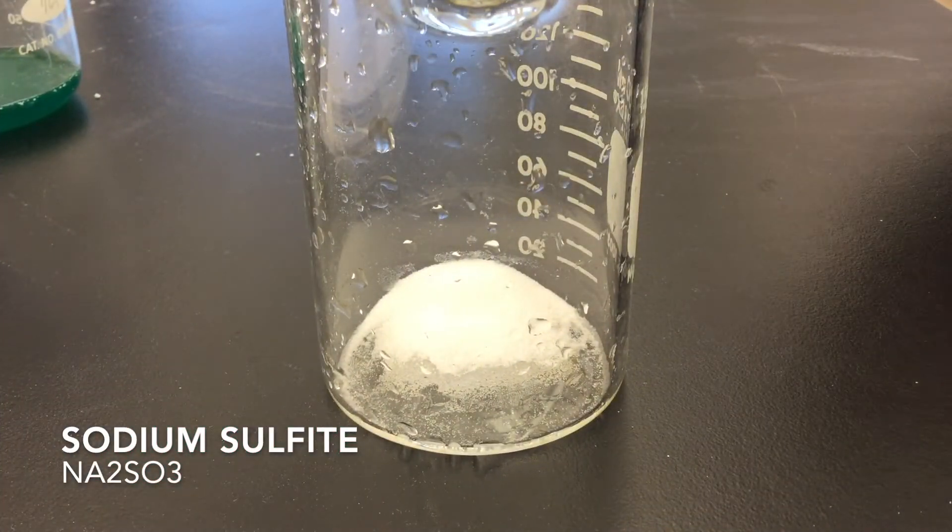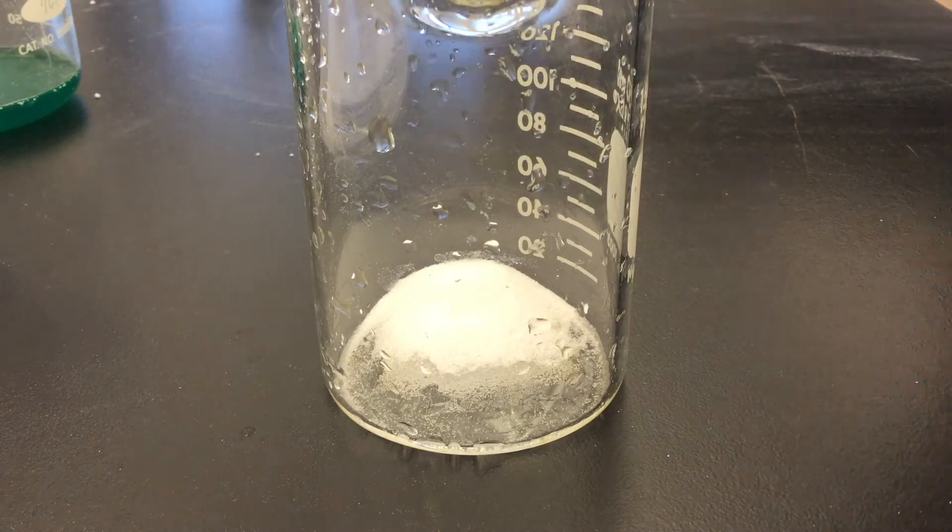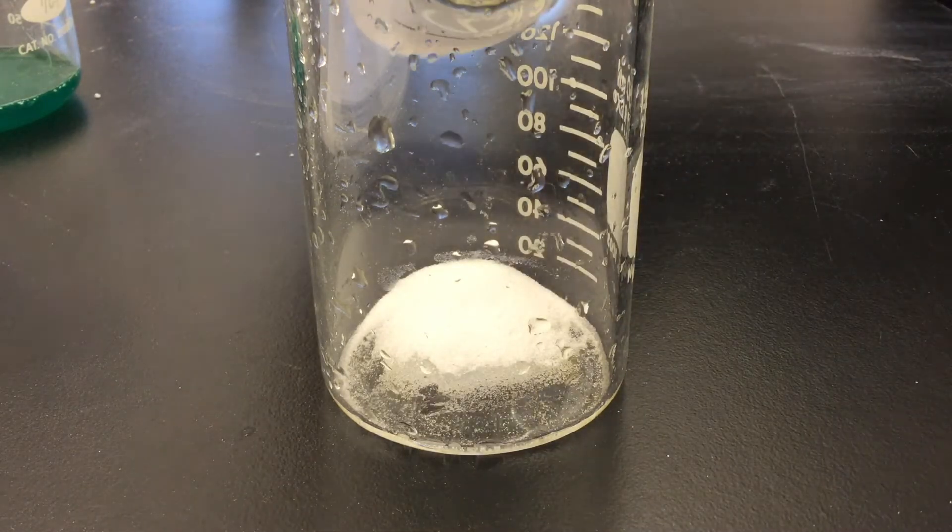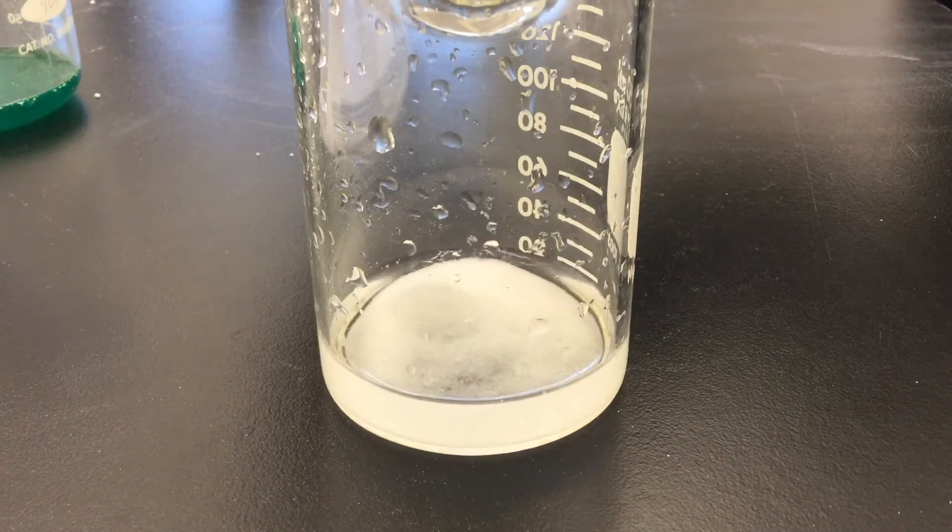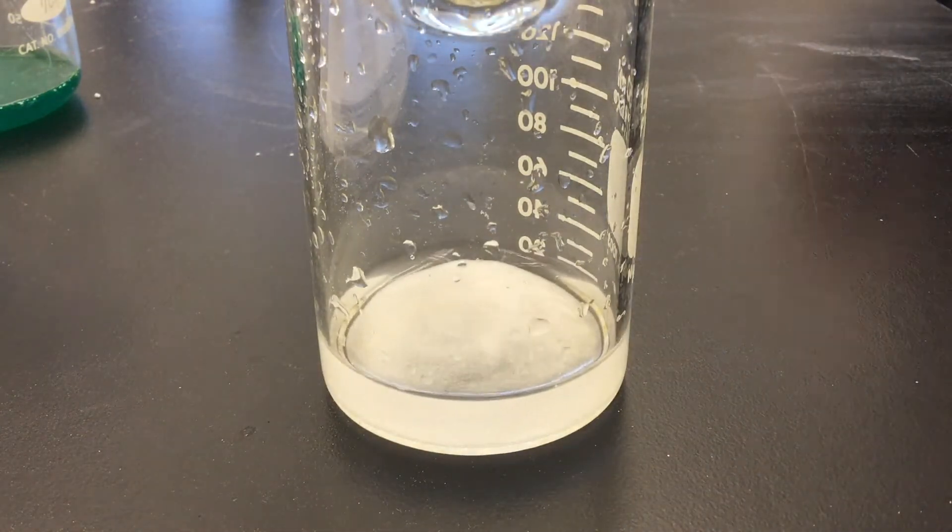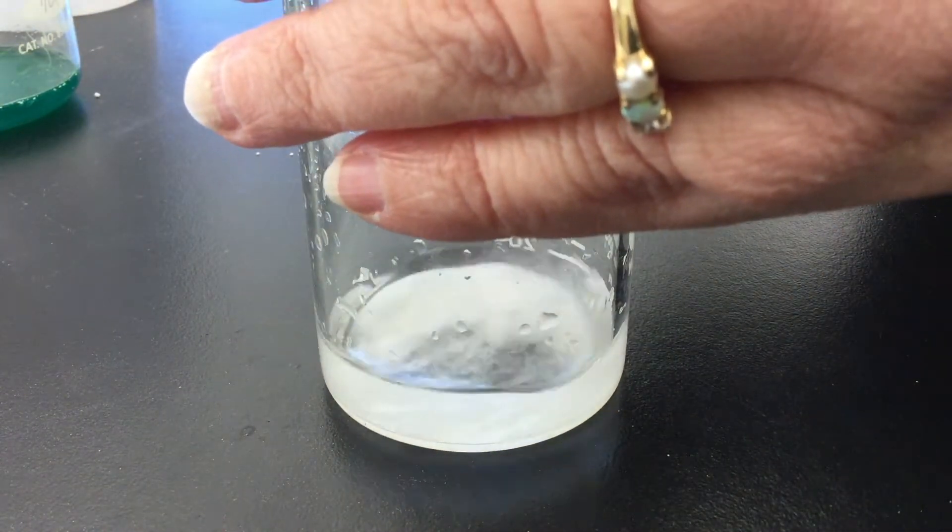You should have determined ahead of time what the stoichiometric amount of sodium sulfite would be. You are going to use approximately twice this, but no more than twice. You're going to add about 25 to 30 milliliters of water and again stir until it completely dissolves.